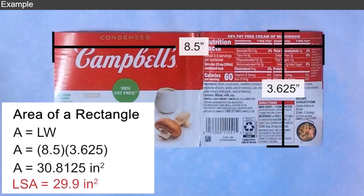Notice that this area is slightly larger than 29.9 square inches. The reason for that is because when the label is put on the soup can, there is some overlap.